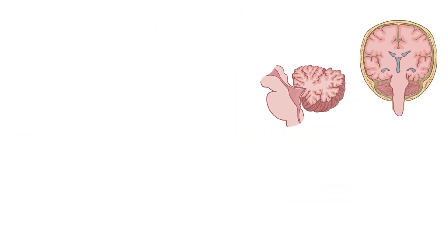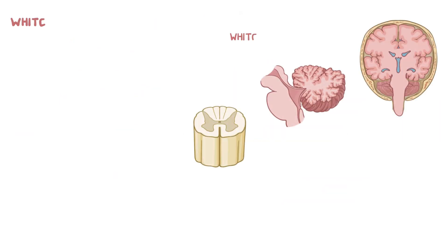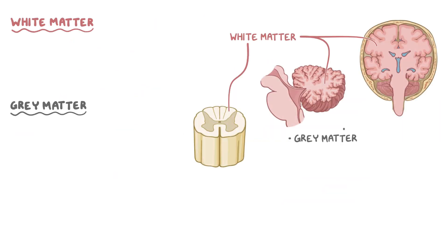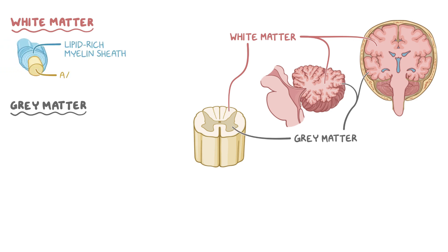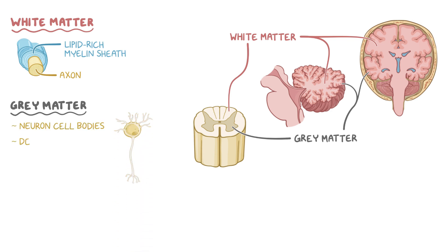Macroscopically, the CNS is made of white matter and gray matter. The difference in appearance is from the lipid-rich myelin sheaths that cover the axons present in white matter, whereas the gray matter consists mostly of neuron cell bodies, dendrites, astrocytes, and microglial cells.